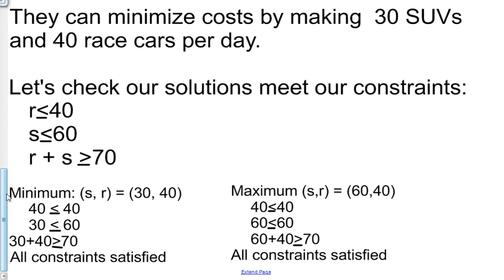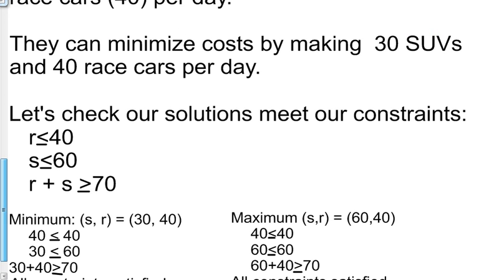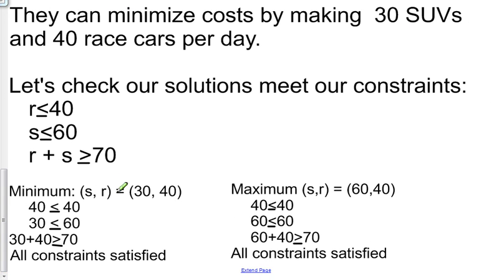Let's check our minimum. Our minimum was 30, 40. So s, r is equal to 30, 40. Is 40 less than or equal to 40? Well yes, it's equal. Is 30 less than or equal to 60? Yes. So 30 plus 40, is that greater than or equal to 70? Yes. So all of our constraints are satisfied for our minimum.